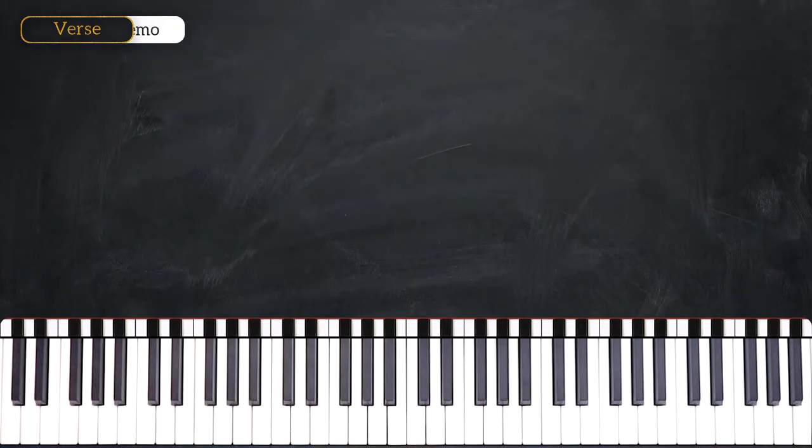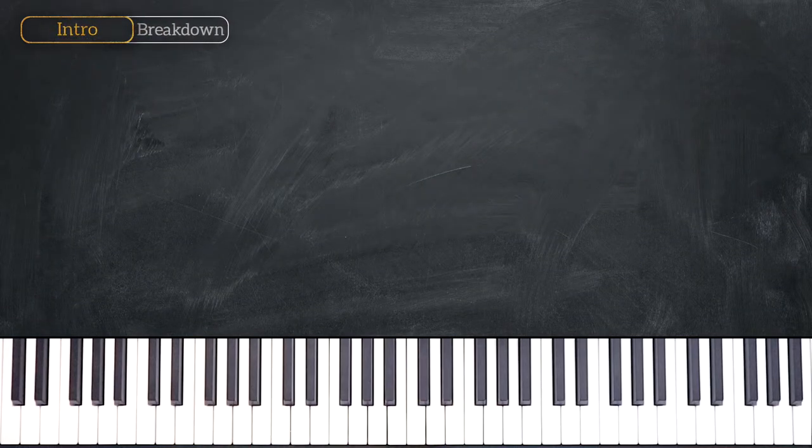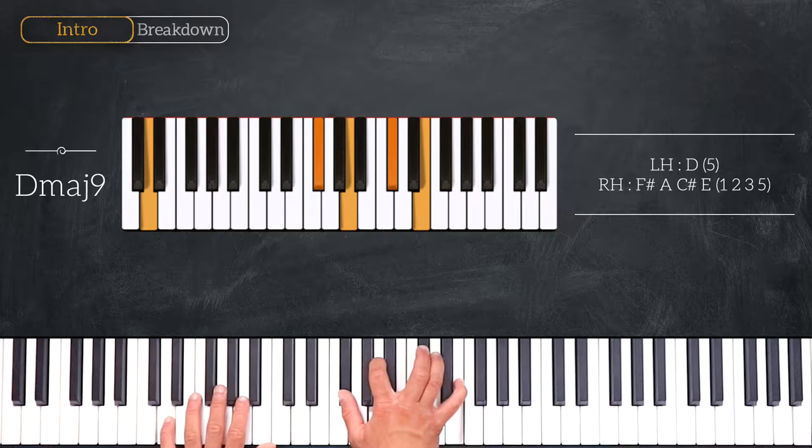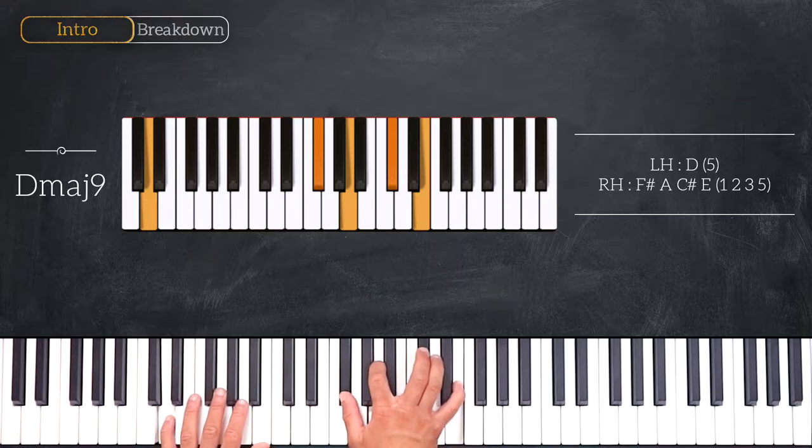Let's break down the chord progression together. The first chord will be a D major 9, playing D on the left hand and F sharp, A, C sharp, E on the right hand. This is the first degree of the scale.